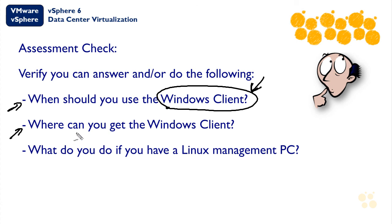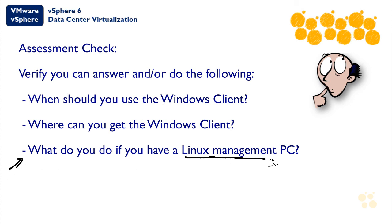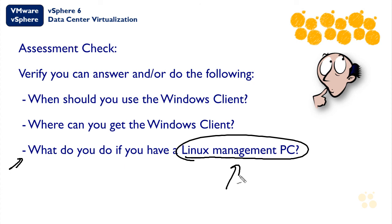Question two: where can you get the Windows client? Two specific options are available for getting it to your computer — covered in the previous section of this nugget. Question three: what do you do if you have a Linux management PC, don't have vCenter, and can't use the vSphere Web Client? The answer is: you need to get Windows — either through a separate physical machine or a virtualized one. On Linux you can run VMware Workstation, or on a Mac you can run VMware Fusion, and then use a Windows VM to run the Windows client.